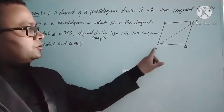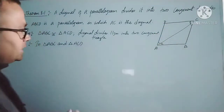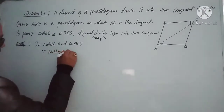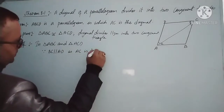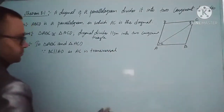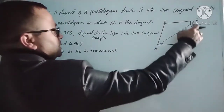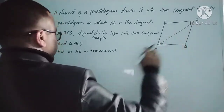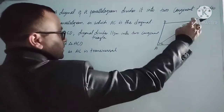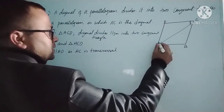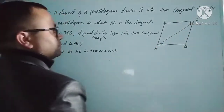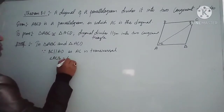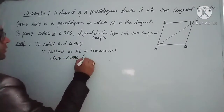Here, BC is parallel to AD. Since BC is parallel to AD and AC is the transversal, the alternate interior angles are equal. So angle ACB equals angle BAC — it is an alternate interior angle.